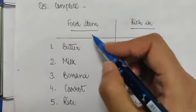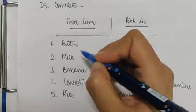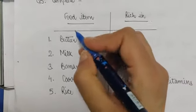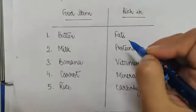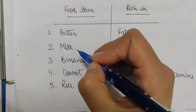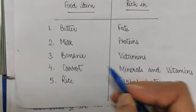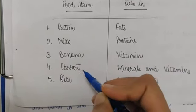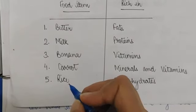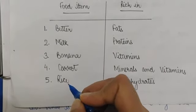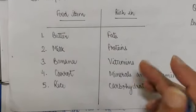Fifth question. I have written some food items here. And I have to tell you what this food item is rich in. I have told you that butter is very fatty. It is rich in fats. Milk is a complete food, but protein is the most. Banana is a fruit. There are vitamins. Carrots have minerals and vitamins. Rice is a cereal. There are carbohydrates.